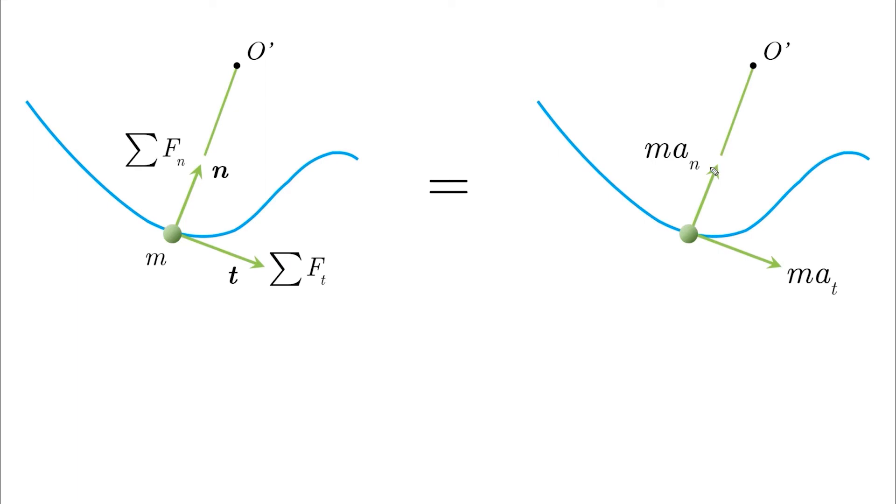So when we write Newton's second law, always make sure that the positive of the equation is the positive of the acceleration. So at here is positive to the right, which is the positive of the equation, and same for an, it is always positive towards the center of the curvature.